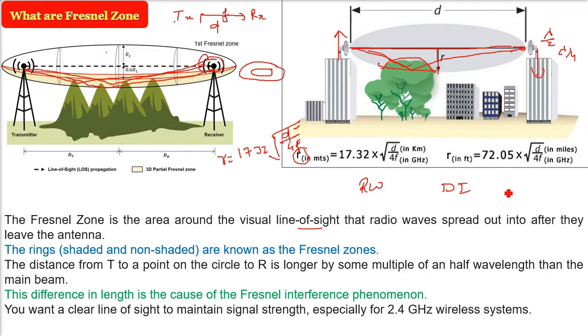So you want a clear line of sight to maintain signal strength, especially for this 2.4 GHz wireless system. This is because these waves at this particular frequency and higher are more likely to be absorbed by water and trees and all these natural occurring phenomena.